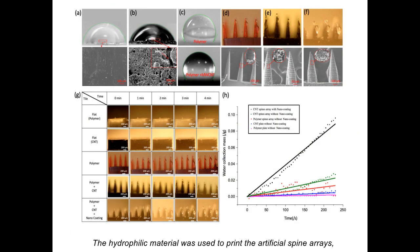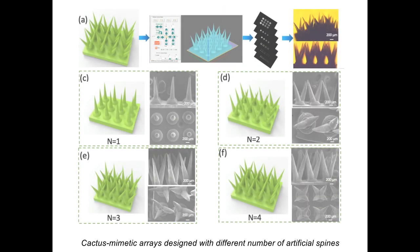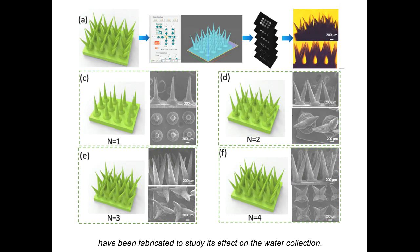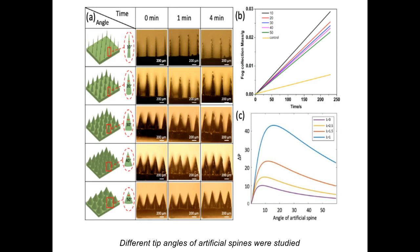The hydrophilic material was used to print the artificial spine arrays, which were coated with a hydrophobic nano-layer. Cactus memetic arrays designed with different numbers of artificial spines have been fabricated to study their effect on water collection. Different tip angles of artificial spines were studied to optimize water condensation and transportation.